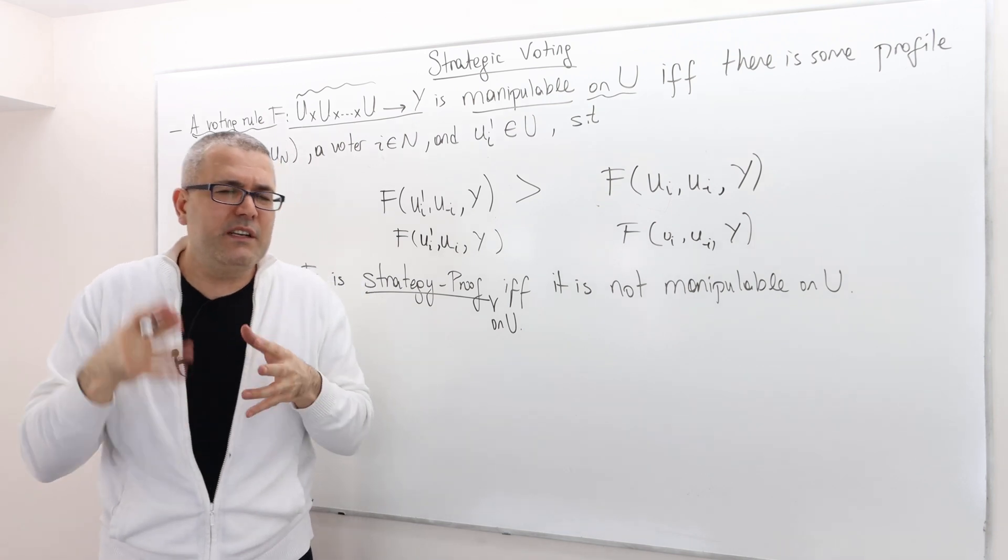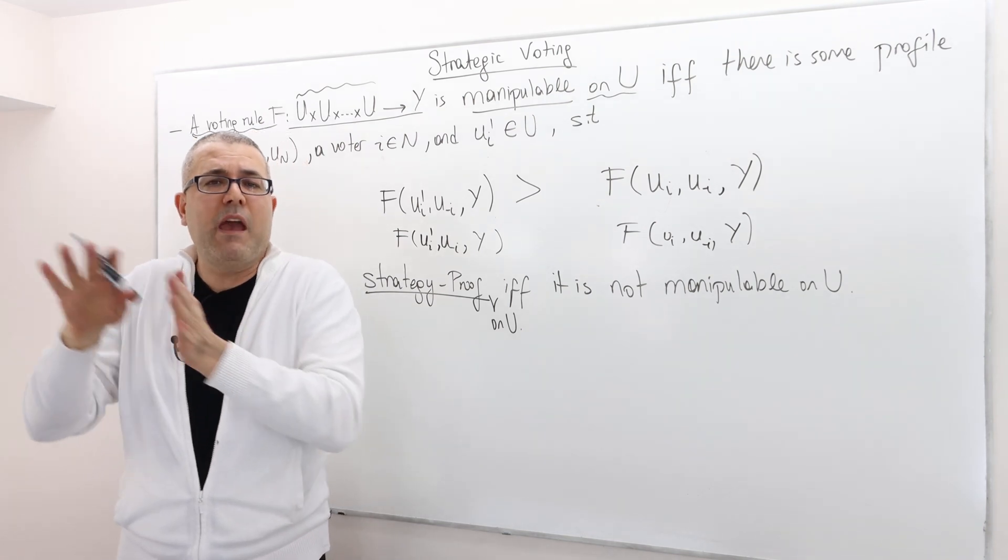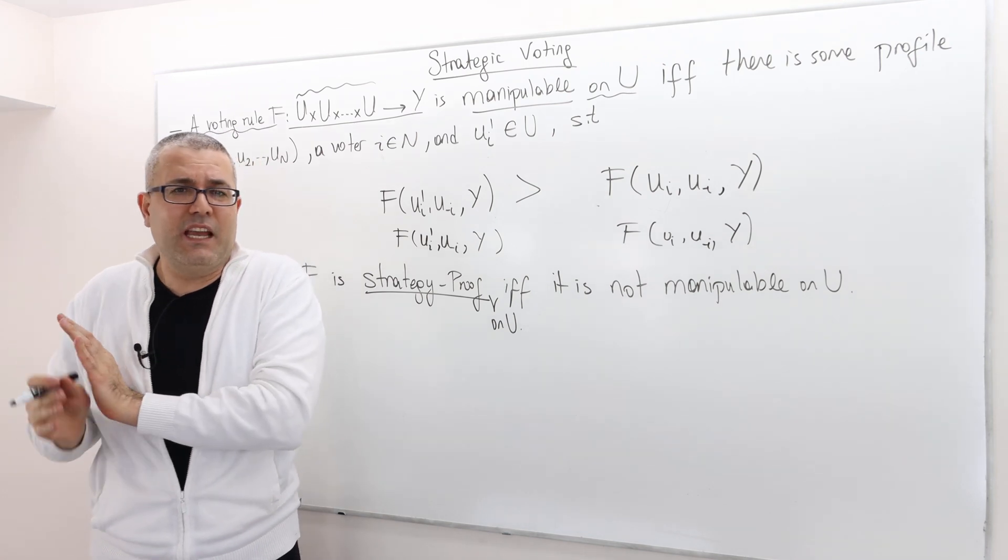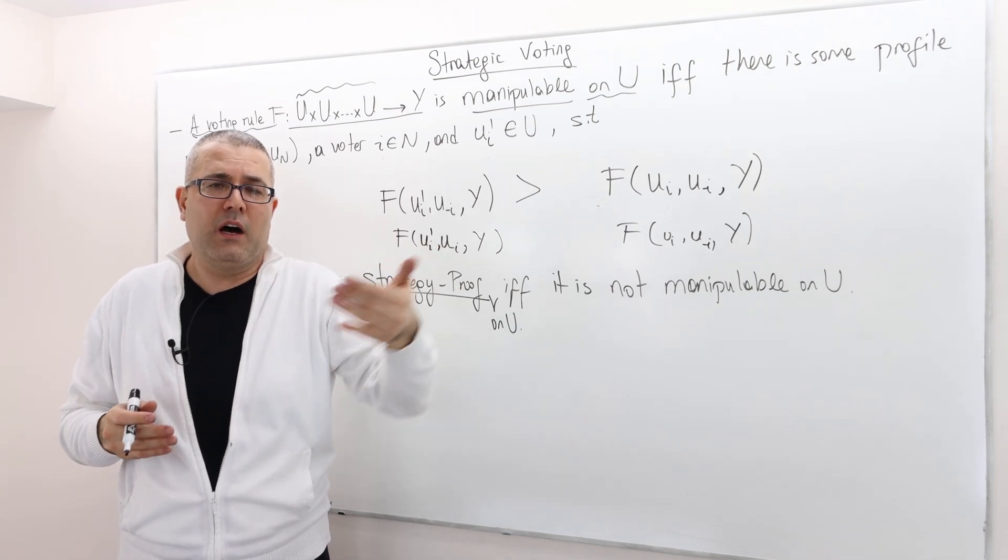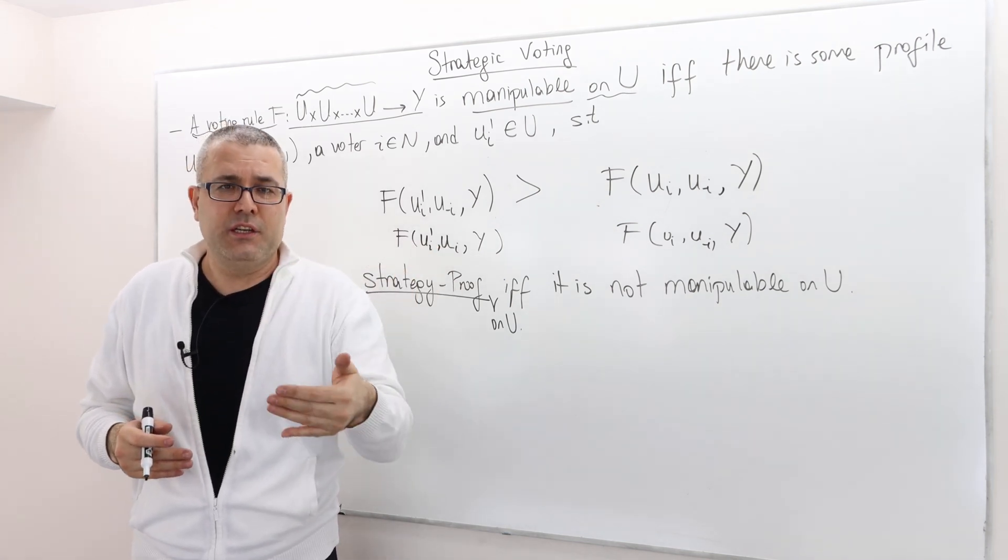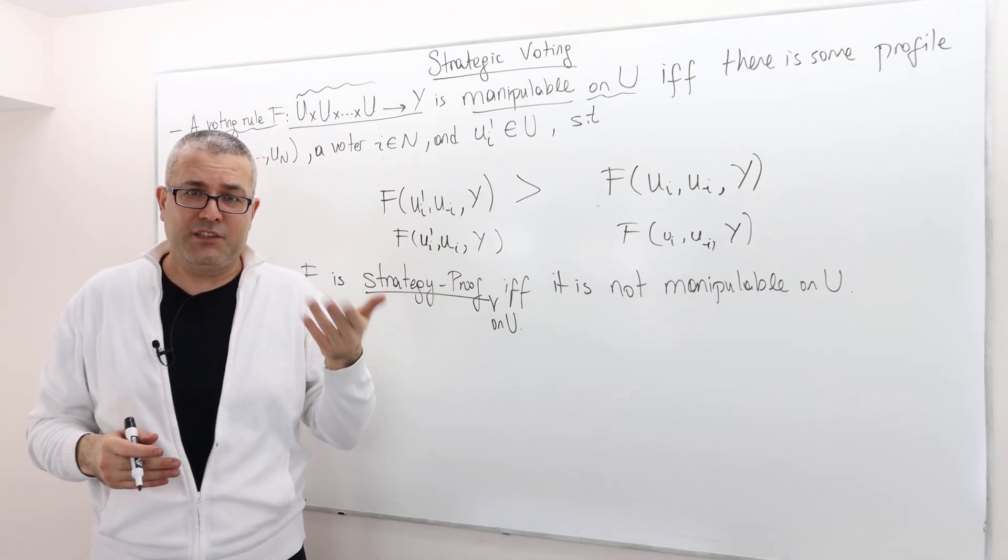All right. So what happens, remember the Nash equilibrium, one player deviates. It's like keep everybody's strategy the same. So here, declaring your preference relation U I is your strategy. Question is, are you going to declare your true strategy?